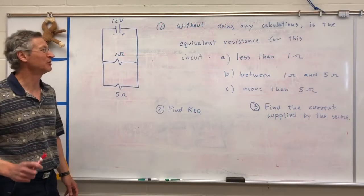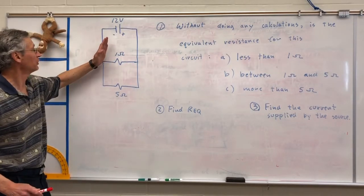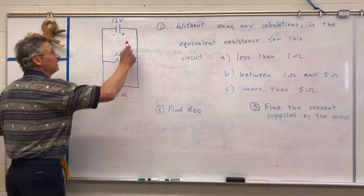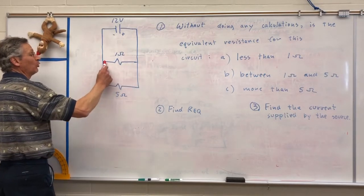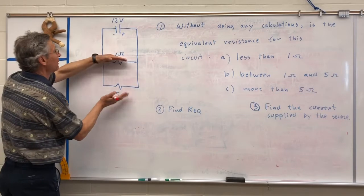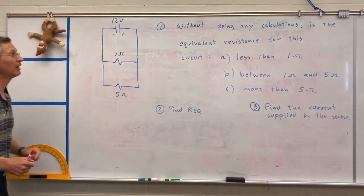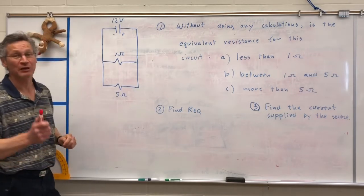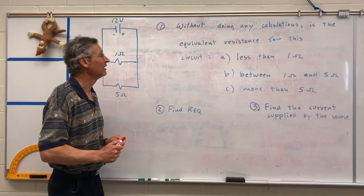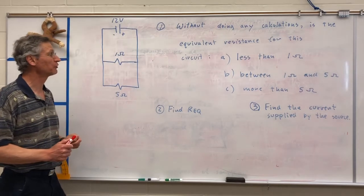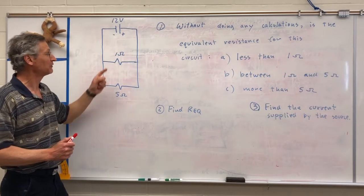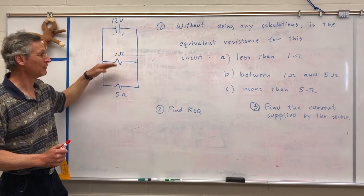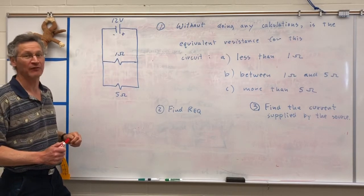Here's an example. We have a 12-volt source with a 1-ohm resistance and a 5-ohm resistance connected in parallel. The first question: without doing any calculations, is the equivalent resistance A) less than 1 ohm, B) between 1 and 5 ohms, or C) more than 5 ohms?